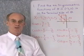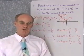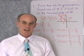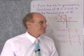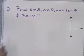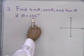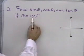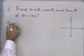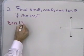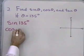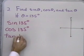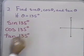This is the first kind of problem you need to be able to work in trigonometry: given a point on the terminal side of an angle, find the six trigonometric functions. For our next problem, we're actually given an angle — θ = 135 degrees. Let's find sine, cosine, and tangent of 135 degrees.